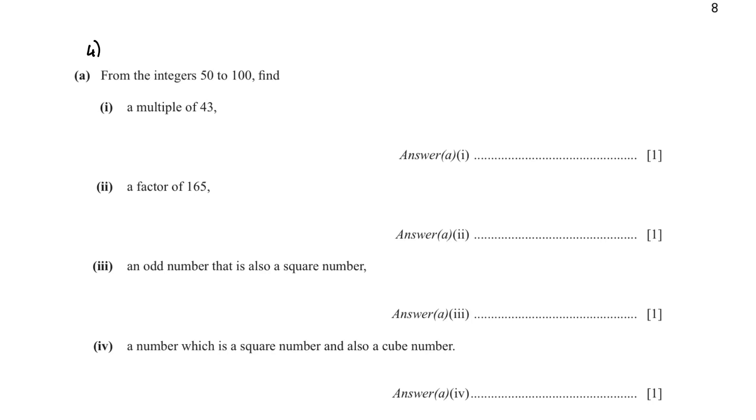Question number 4. From the integers 50 to 100, find a multiple of 43. We know that 1 times 43 is 43, so we will do 43 times 2, and we got 96. So the answer is 96. A factor of 165. Divide 165 by different numbers to check what answer you will get. 165 divided by 3 will give us 55.